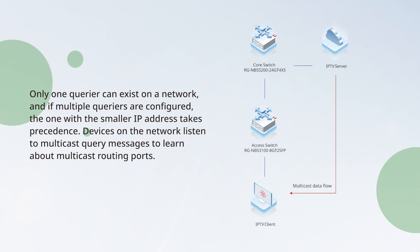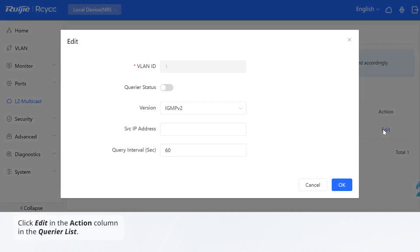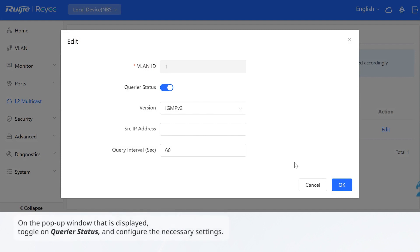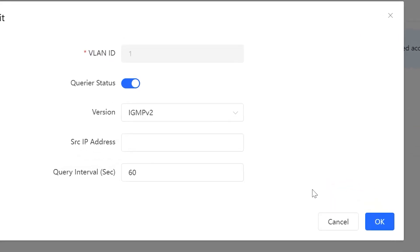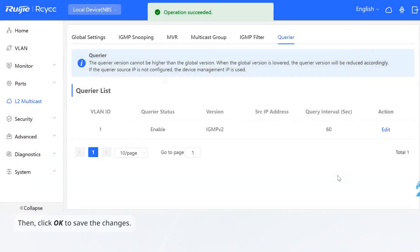Only one querier can exist on a network, and if multiple queriers are configured, the one with the smaller IP address takes precedence. Devices on the network listen to multicast query messages to learn about multicast routing ports. Therefore, you are advised to set the querier on the switch that is closest to the multicast source. Click Edit in the action column in the querier list. On the pop-up window that is displayed, toggle on Querier Status and configure the necessary settings, then click OK to save the changes.